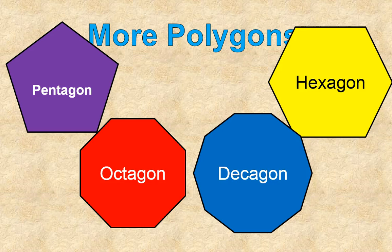And decagon is a ten-sided polygon. So those are just some pretty common polygons that are classified by the number of sides that they have: pentagon, hexagon, octagon, decagon, with five, six, eight, and ten sides.